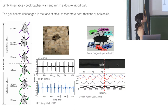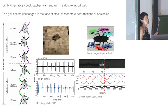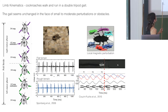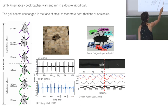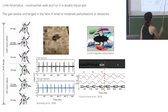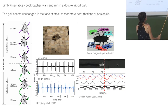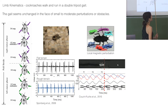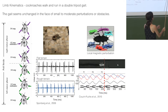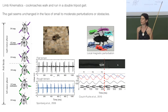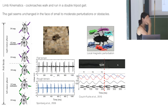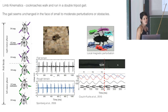This gait appears unchanged even with perturbations or obstacles. Cockroaches walking on blocks the size of their own body show almost identical muscle activation on flat versus rough terrain. When we applied specific magnetic perturbations to one leg — completely jerking it upward — the movement pattern hardly changed at all. Cockroaches have very fast dynamic stability allowing them to ignore many perturbations.